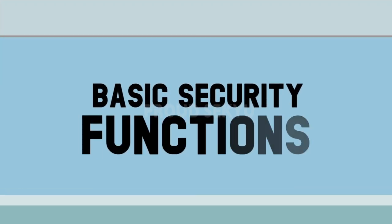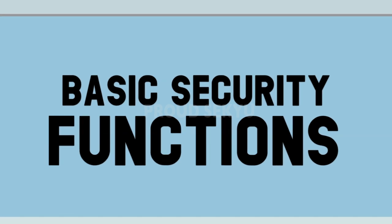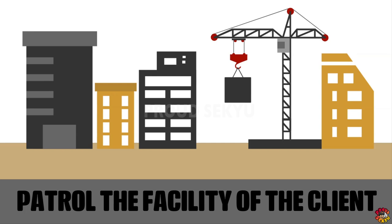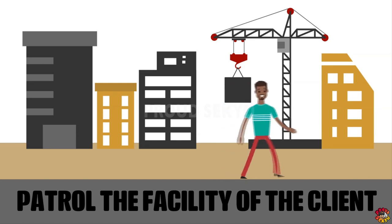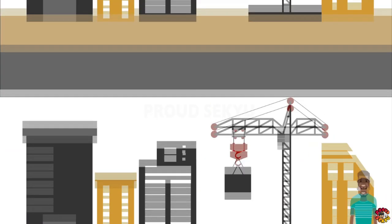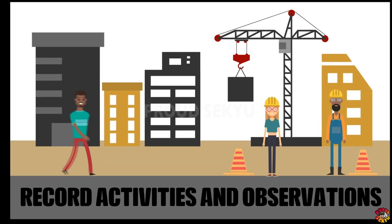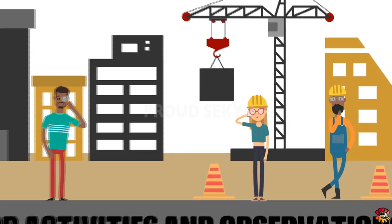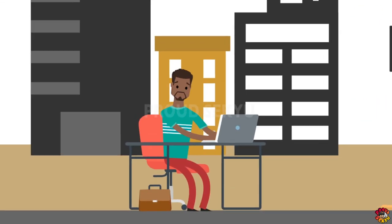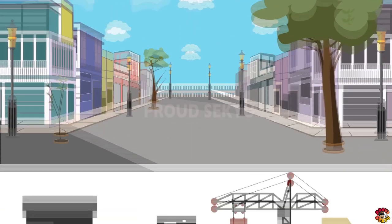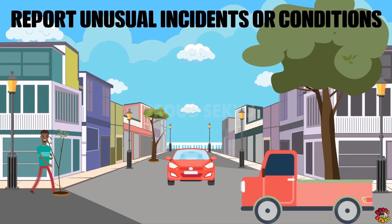The basic functions of the guard provide for the manner by which the general orders of the guards are applied. The guard has the following basic functions and activities: patrol the facility of the client, record activities and observations, and report unusual incidents or conditions.